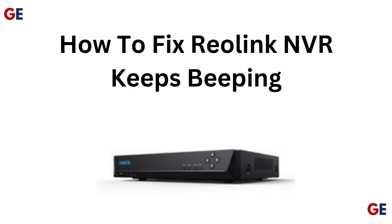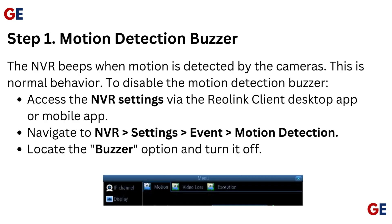How to fix Reolink Envir keeps beeping. Step 1: Motion detection buzzer. The Envir beeps when motion is detected by the cameras — this is normal behavior. To disable the motion detection buzzer, access the Envir settings via the Reolink client desktop app or mobile app. Navigate to Envir settings, then Event, then Motion Detection. Locate the buzzer option and turn it off.